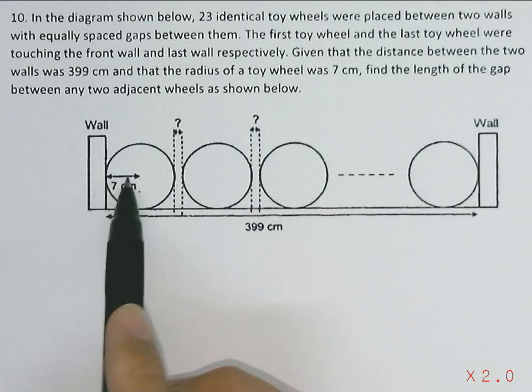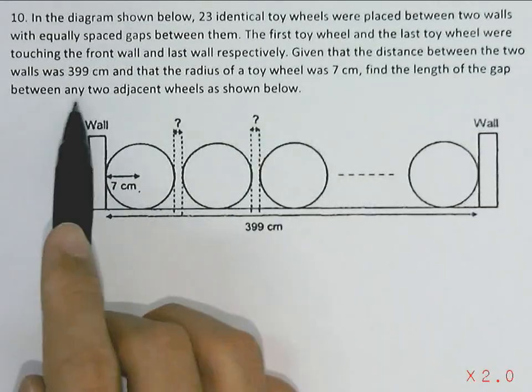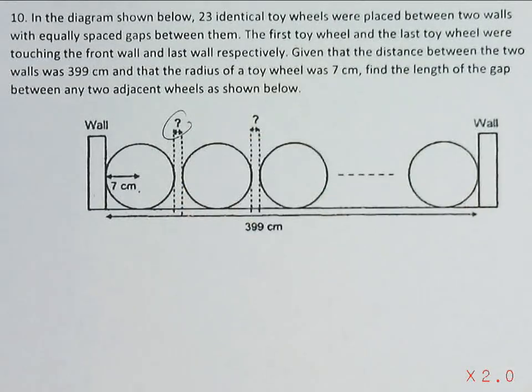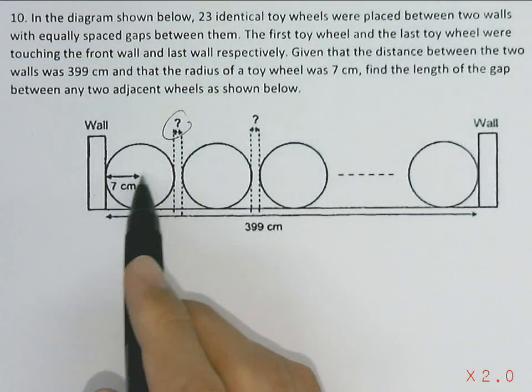Find the length of the gap between any two adjacent wheels as shown below. So they're looking for this question mark over here, which is the gap between every two toy wheels. From here, first we know that the radius of one toy wheel is 7 cm, and since all these toy wheels are identical, we can first find out the distance covered by the diameter of all these toy wheels.